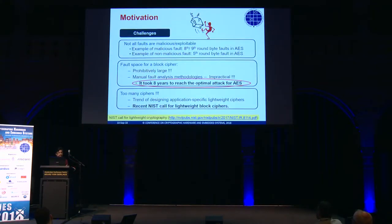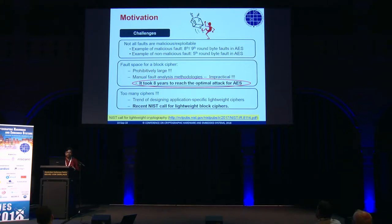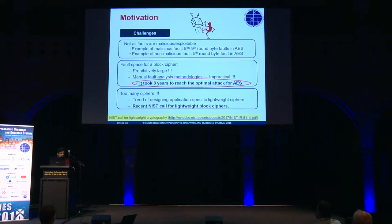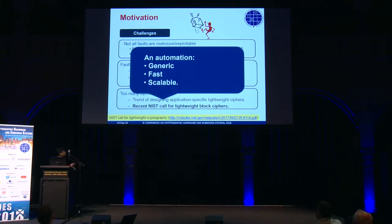There are several challenges involved. First of all, not every possible fault is malicious or exploitable. The fault space of ciphers is huge — of prohibitive size most of the time — and analysis is quite complex. For example, it took around eight years to figure out the optimal attack on AES due to Professor Tunstall. And even after that, people found new attacks at the seventh round. The game never ends. Now we have too many ciphers — hundreds of them probably — and more are coming within a couple of years with the NIST call for lightweight cryptography.